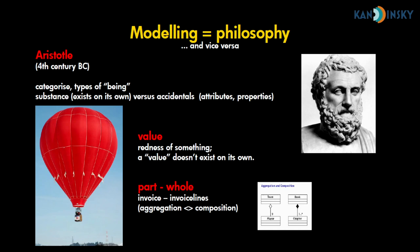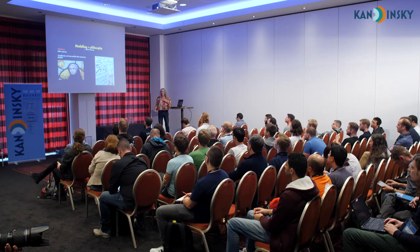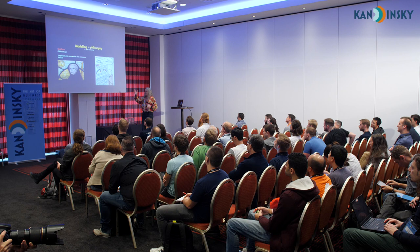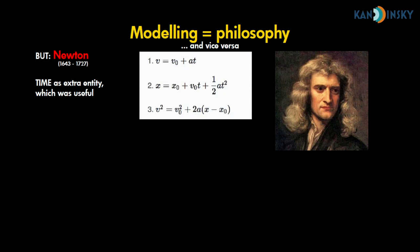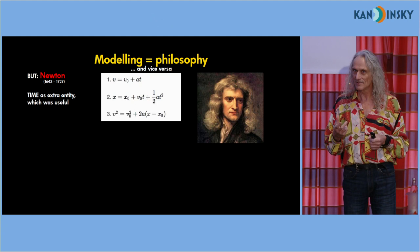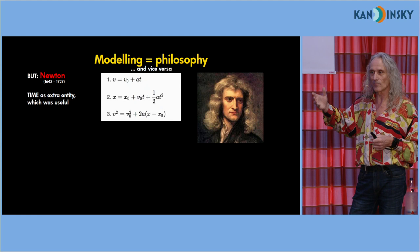About 17 centuries later, William of Ockham also said: just cut down all the extra entities you don't need — choose for the simplest solution. But that's not always true. Sir Isaac Newton modeled time and space as extra entities, and he could do some calculations with it. So he added those things to his model because it was useful, and it makes his models more useful.